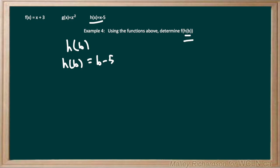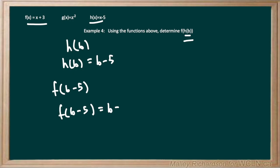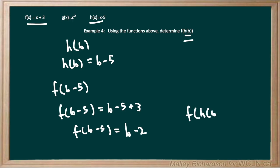So instead of f of h of b, we have f of b minus 5. Using f of x equals x plus 3, we replace all x's with b minus 5. So f of b minus 5 equals b minus 5 plus 3, which simplifies to b minus 2. Therefore f of h of b equals b minus 2.